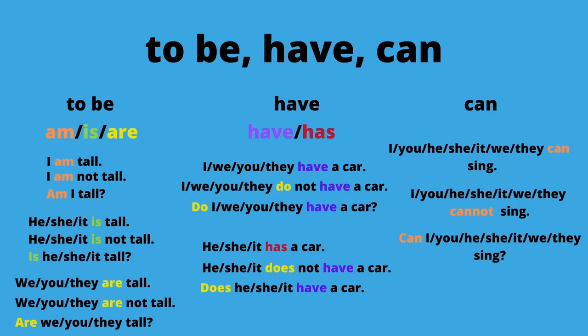'Have' has two different forms. For I, you, we, and they, use 'have': 'You have a car,' 'You do not have a car,' 'Do you have a car?' — we use 'do' as you can see. For the third person he, she, it, use 'has' — not 'haves,' it's a different form: 'He has a car,' 'He does not have a car,' 'Does he have a car?'